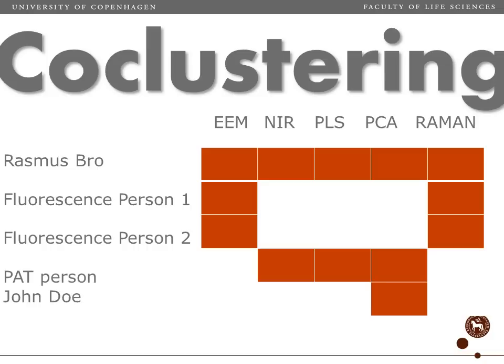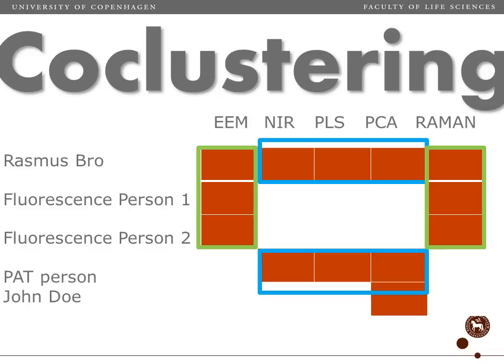That means I cannot be in the fluorescence cluster because I am already in the PAT cluster. With co-clustering, different people can be in different groups. We could make a fluorescence cluster containing me and the two fluorescence persons, loading only on EEM and Raman, and then a PAT cluster where I also appear but loading only on the three PAT variables: NIR, PLS, and PCA. It's not strictly a perfect example, but it illustrates the concept of co-clustering.